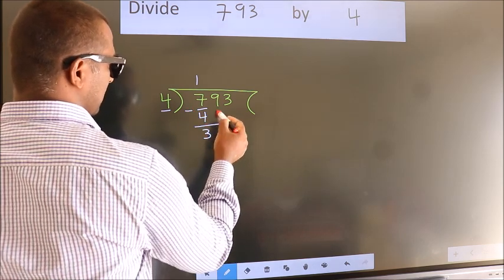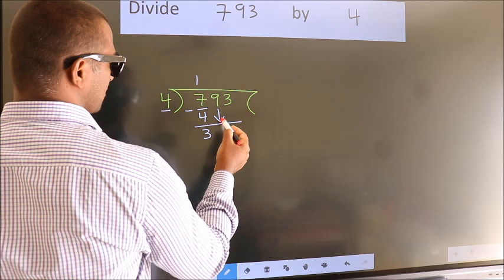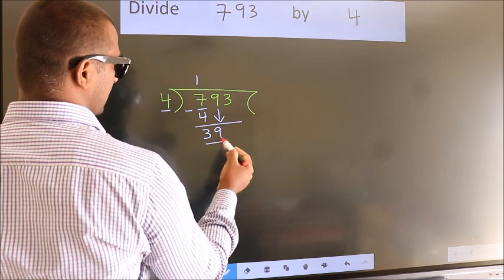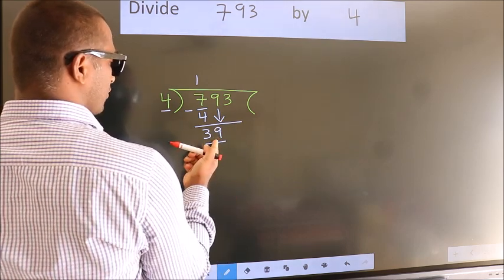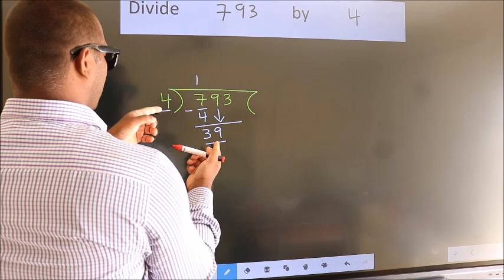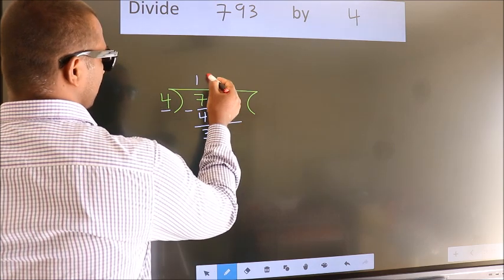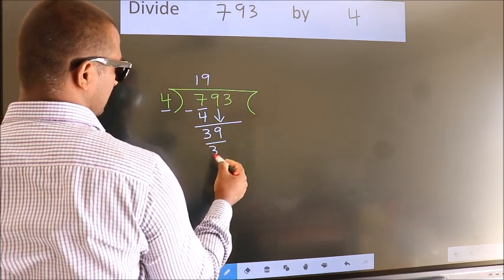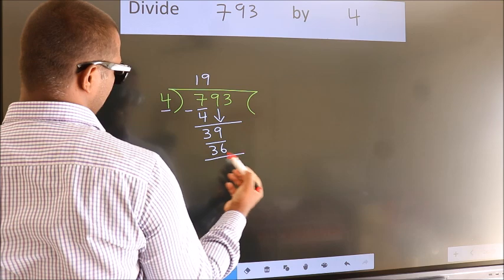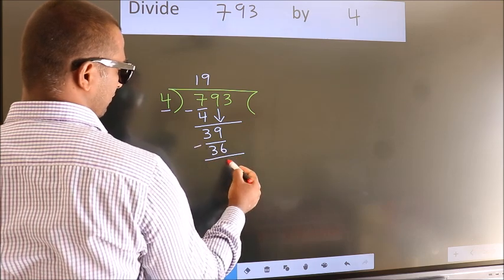After this, bring down the beside number, so 9 down, giving us 39. A number close to 39 in 4 table is 4 nines, 36. Now we subtract, we get 3.